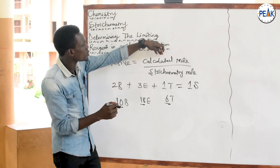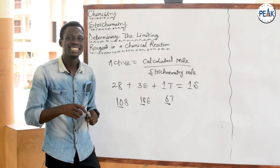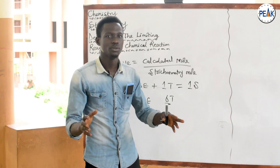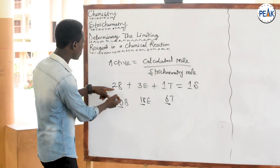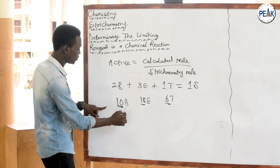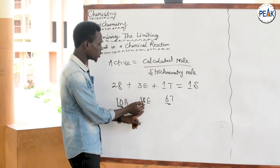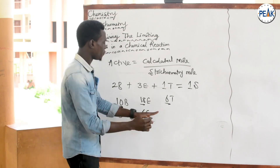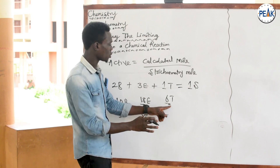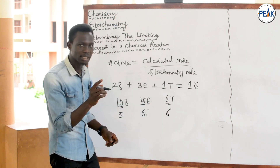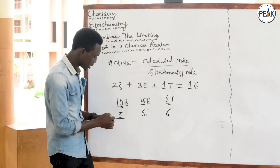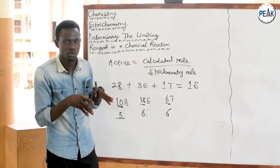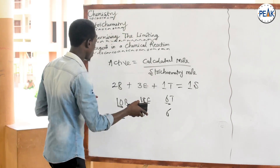To get the active mole: active mole = calculated mole ÷ stoichiometric mole. The reagent with the smallest active mole is the limiting reagent. For bread: 10 ÷ 2 = 5. For egg: 18 ÷ 3 = 6. For tomato: 6 ÷ 1 = 6. Bread has the smallest active mole, so bread is the limiting reagent.